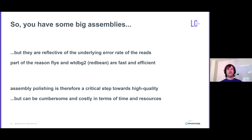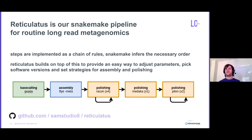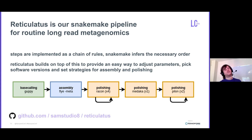We have some really big assemblies, but they are still reflective of the underlying error rate of the reads, and this is part of the reason that long-read assemblers are able to be so fast and efficient. Post-assembly polishing is therefore a critical step towards high-quality genomes, but it's a cumbersome and costly step in terms of computational time and resources. So as a bioinformatician, I've written my own pipeline called Reticulatus — a pun based on the Latin name of the longest snake. It's a Snakemake-based pipeline that lets you define a set of rules and workflows. We start with base-called reads from Guppy, use the Flye assembler, then do four rounds of Racon polishing, a round of long-read Medaka polishing, and if we've got short-read data available, two rounds of Pilon.